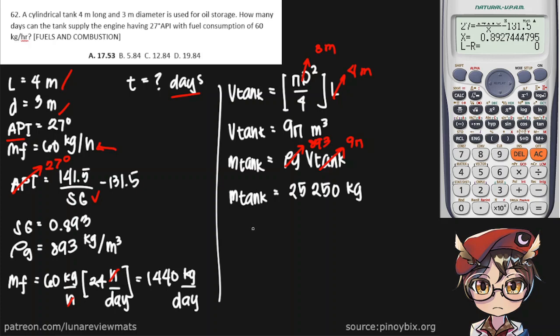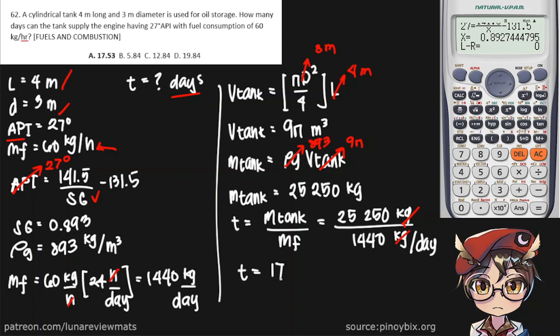So now, to find the time required, we simply divide the mass of our tank by fuel consumption. And we already have both of these. Kilograms per day. The mass cancels out. And our final answer should be 17.53 days.